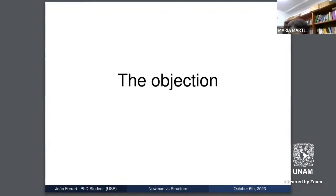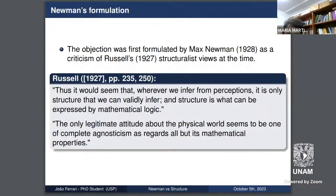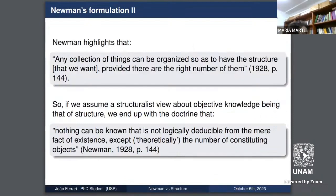Now let's go to the objection. Max Newman was the first to formulate this objection against his colleague Russell's structuralist views, specifically in Russell's book Analysis of Matter, where Russell defended the idea that we only have knowledge of structure. Russell claims this epistemic structural view is expressible through purely formal terms, through mathematical logic. Against this, Newman formulated his objection: any collection of things can be organized so as to have the structure we're interested in, provided there are the right number of them. So nothing can be known except, theoretically, the number of constituting objects — that is, cardinality.